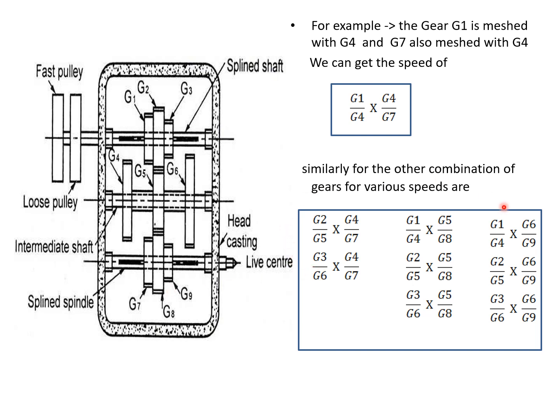So, totally, we can be able to achieve nine different reduction in speeds. So, this is the specialty of this all-gear type headstock mechanism. By using this all-gear type headstock mechanism, we can be able to achieve more number of speed reductions, so we can be able to run this spindle with different speeds. Thank you.